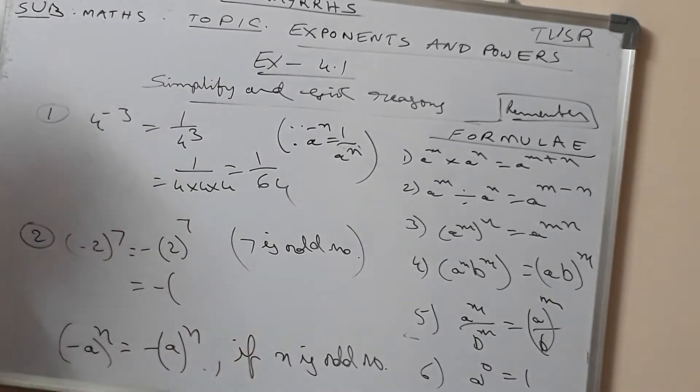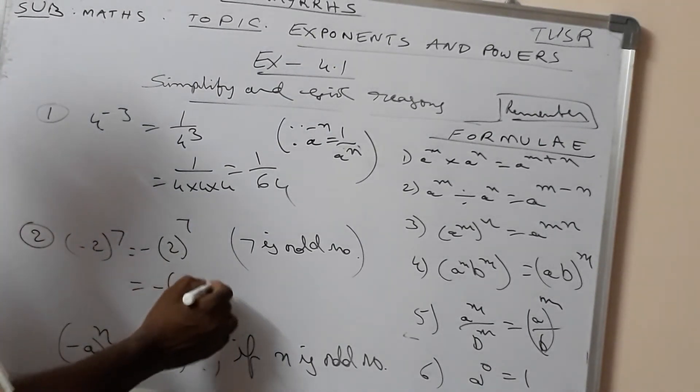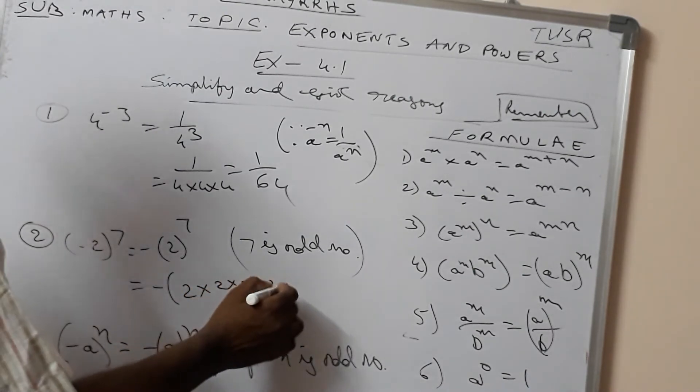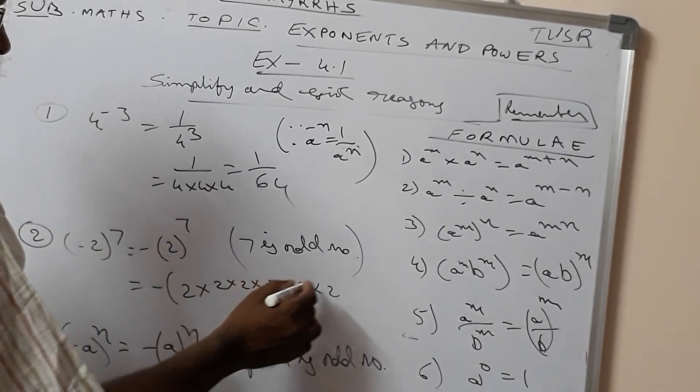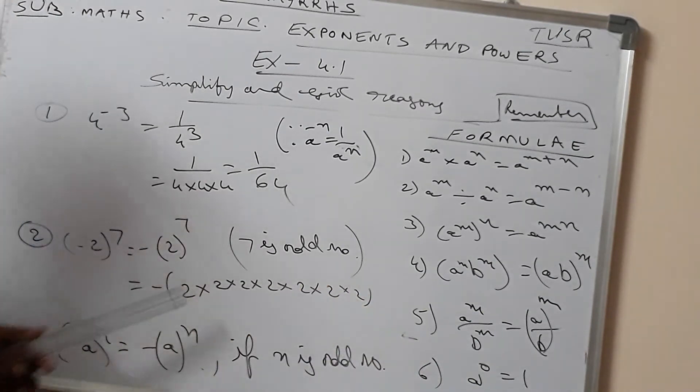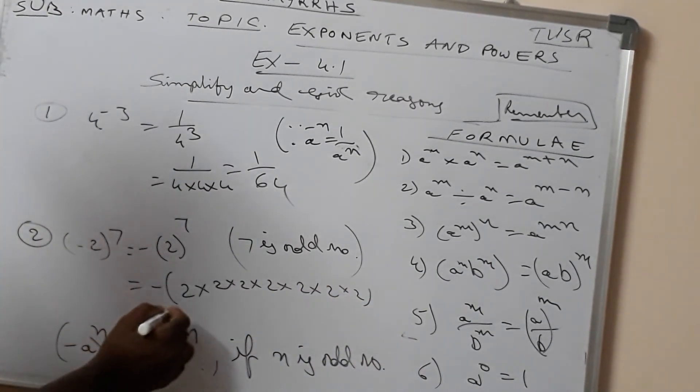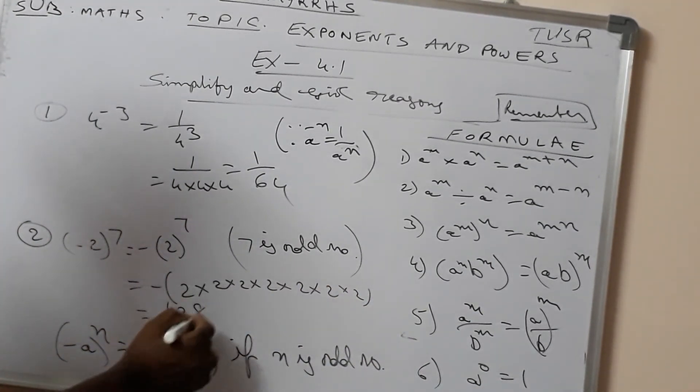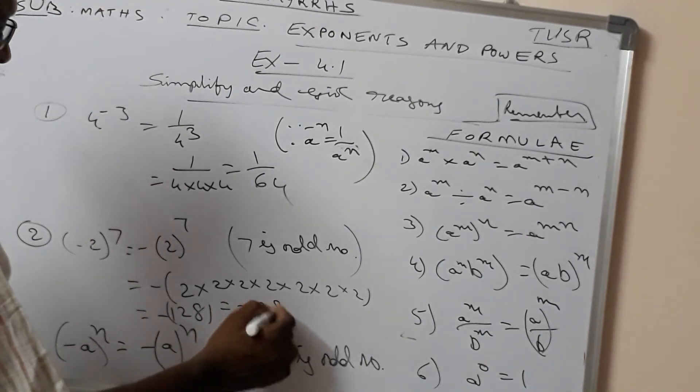2 to the power of 7 equals 128, so this is equal to minus 128.